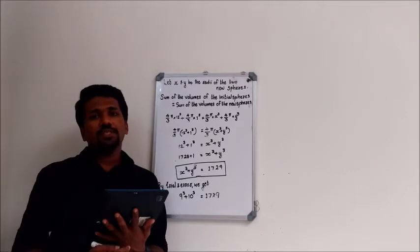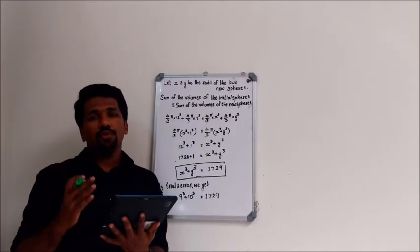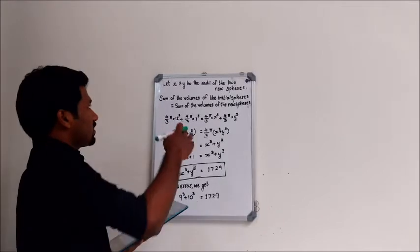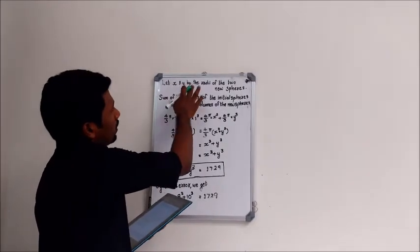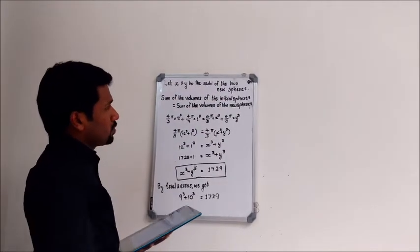So the question is to find the radii of the two new spheres. Let us take the unknowns as X and Y. That is, let X and Y be the radii of the two new spheres.